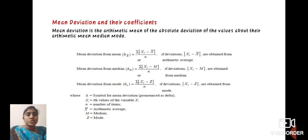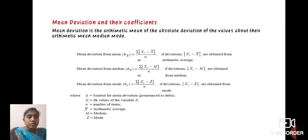Mean deviation is the arithmetic mean of the absolute deviation of the values about the arithmetic mean, mode, or median. Mean deviation from mean: summation of modulus of Xi minus X-bar divided by N, where modulus of Xi minus X-bar are obtained from the arithmetic average. Mean deviation from median (del M): summation of modulus of Xi minus M divided by N. Mean deviation from mode (del Z): summation of Xi minus Z divided by N.